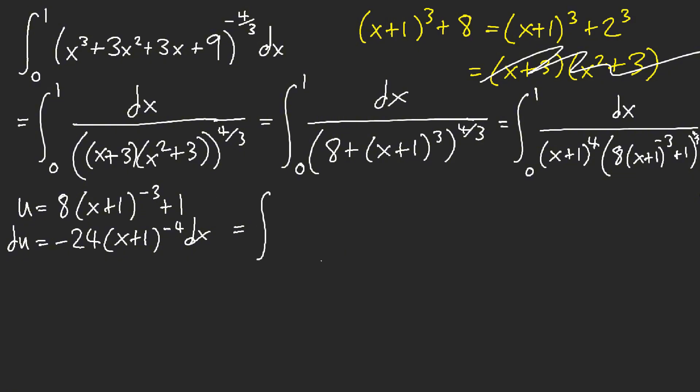All right, plug in 0, we get 9, and then plug in 1 we get 8/(8+1), that's 2. So pretty much that negative here is going to switch the bounds from 2 to 9.